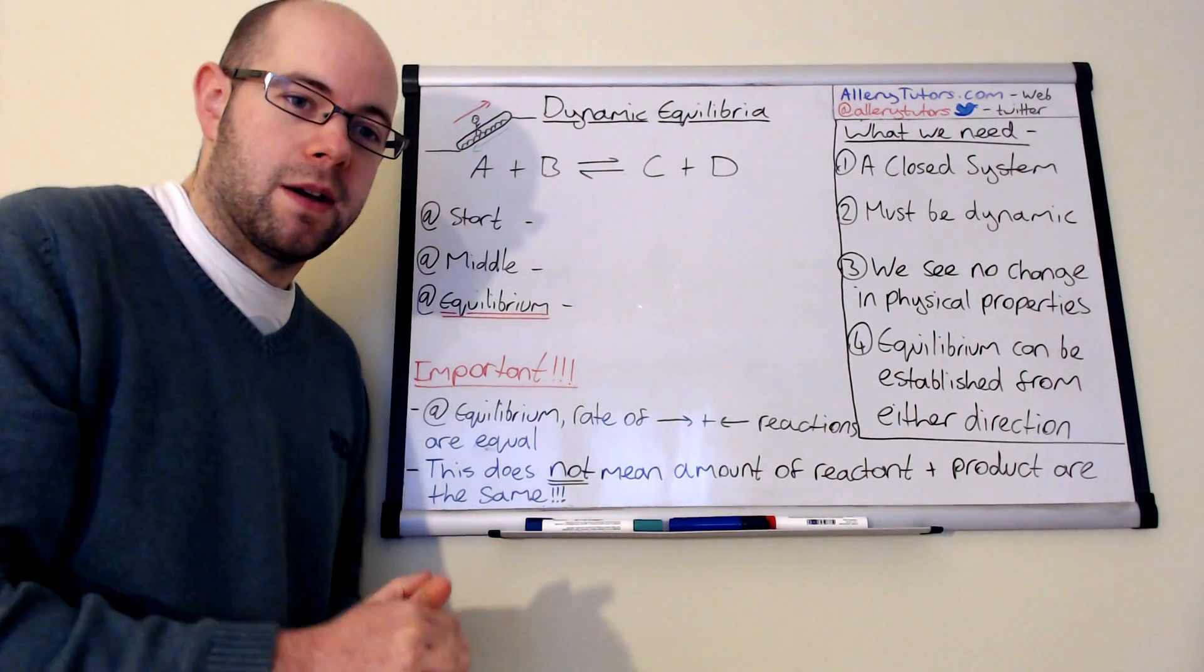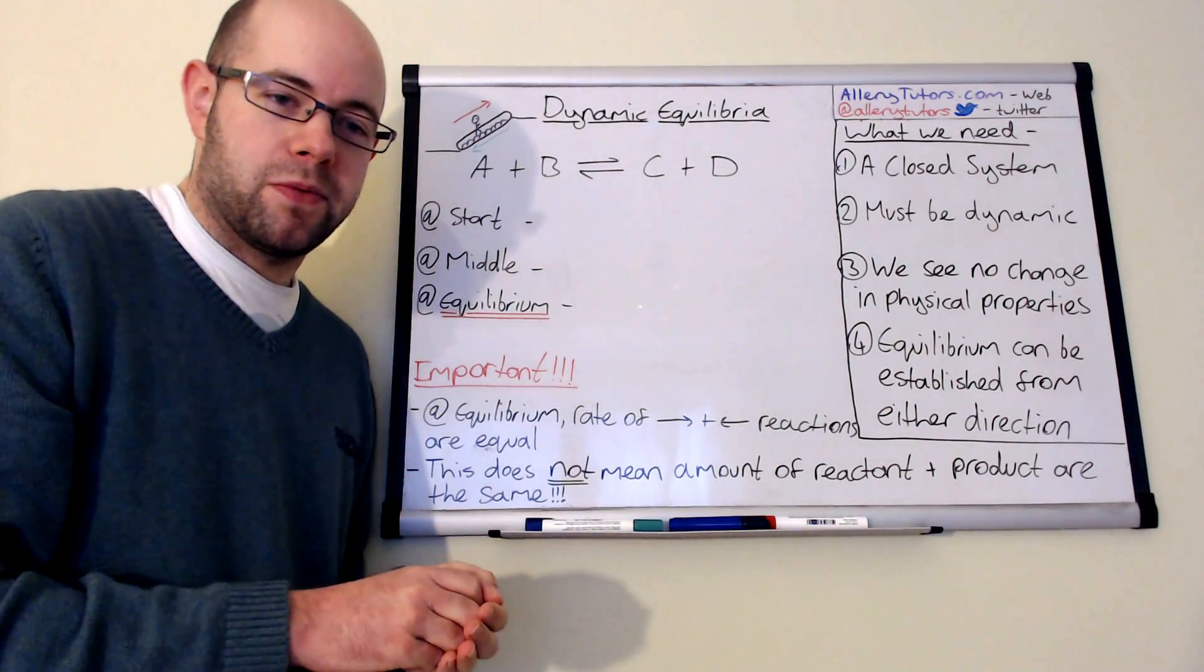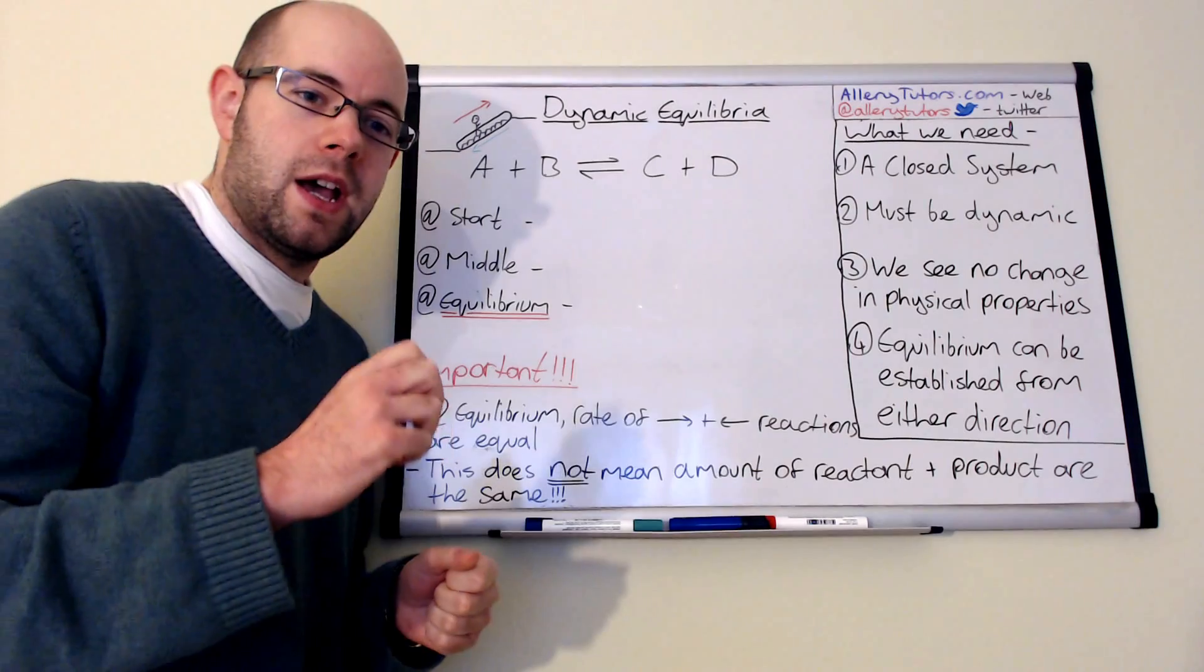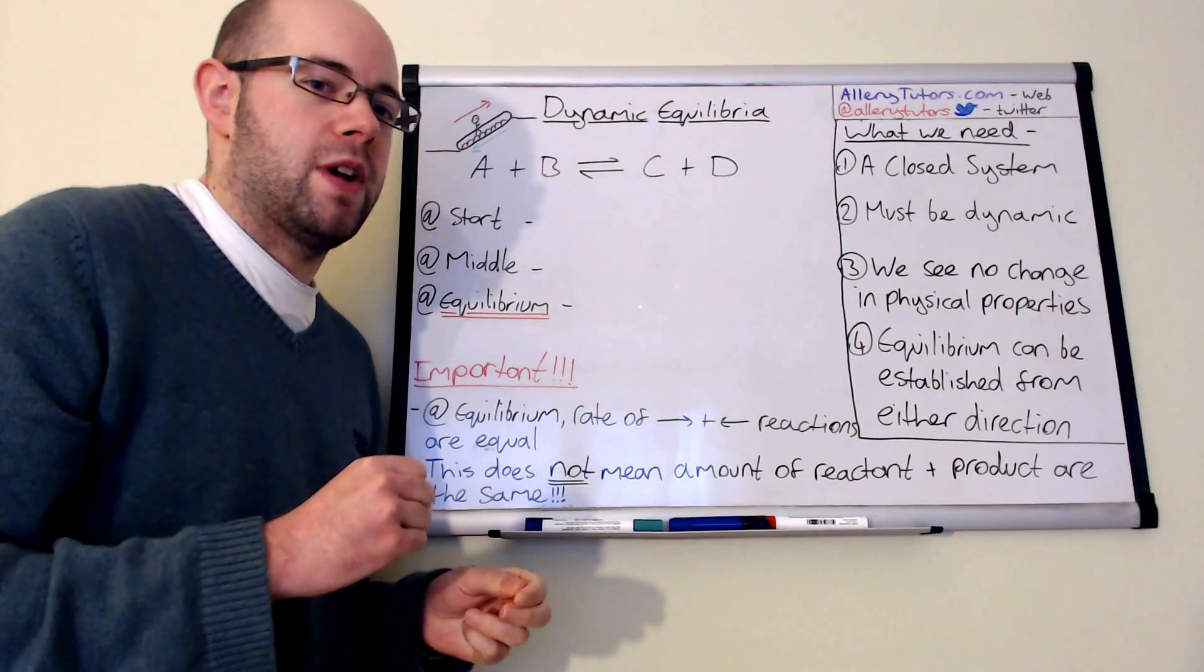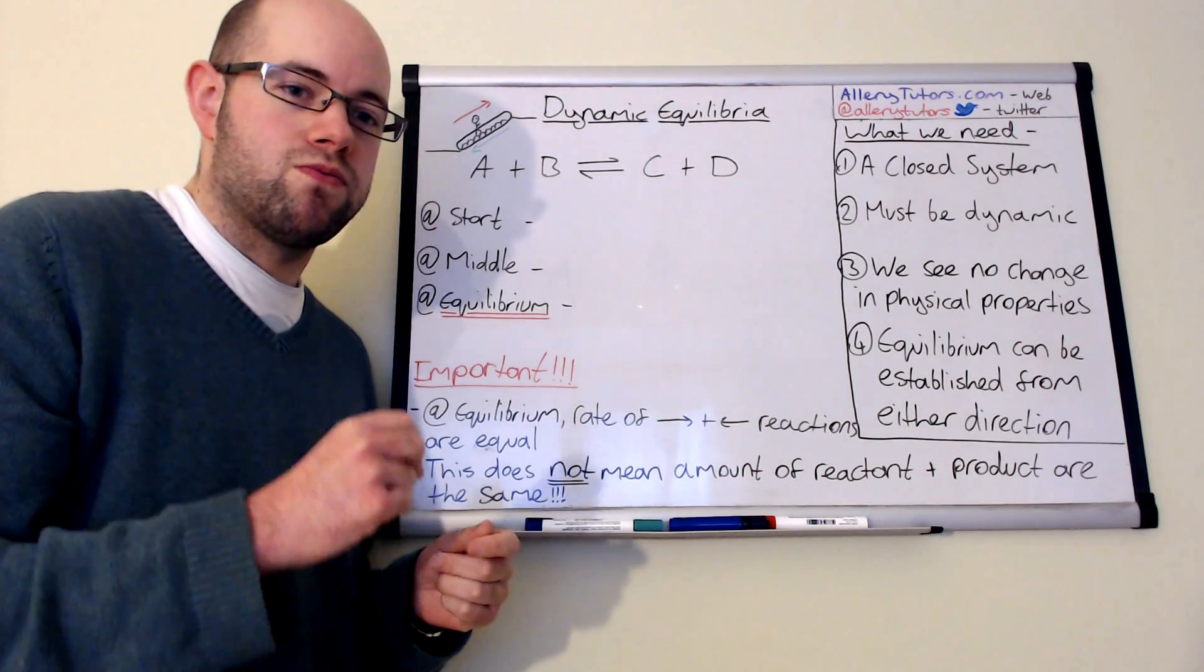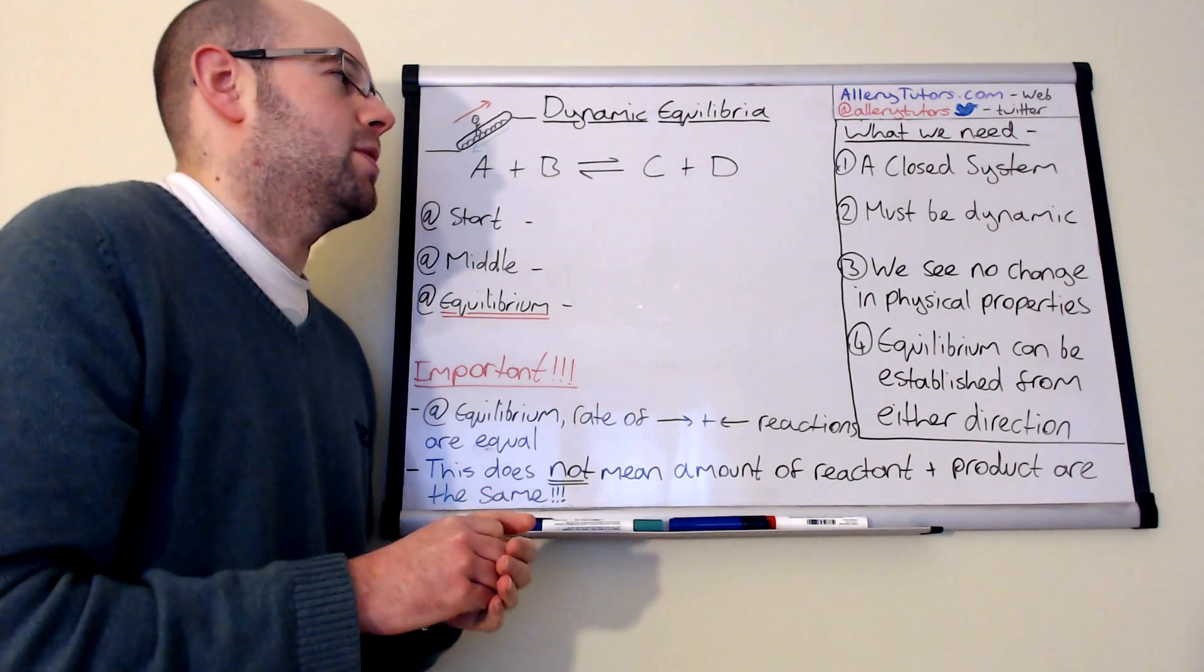Also it must be dynamic. The word dynamic, like I said before, means that the rate of the forward reaction equals the rate of the backward reaction. And it is really important that we mention the word rate in this example as well.